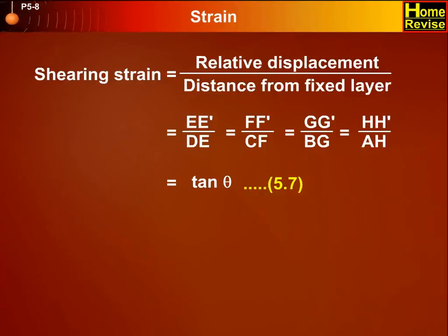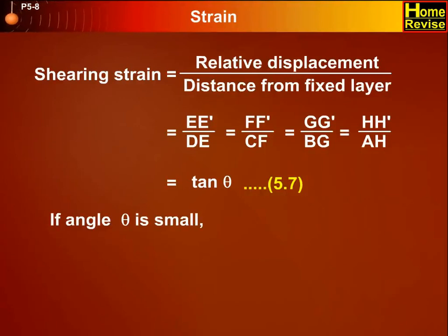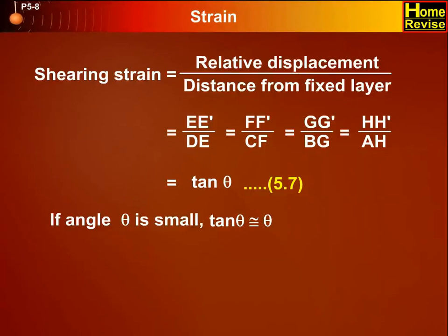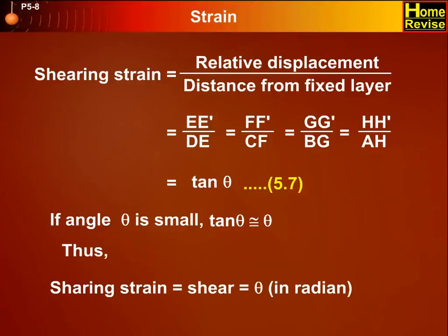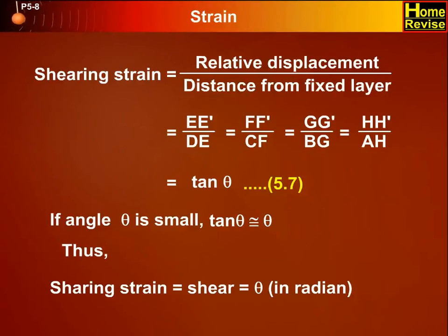This is equation 5.7. If angle theta is small, tan theta is approximately equal to theta. Thus, shearing strain equals tan theta, which equals theta in radian. This is equation 5.8.